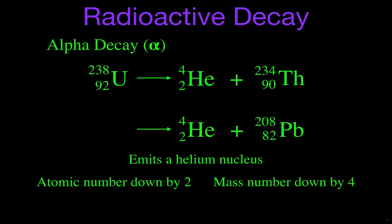We can go back the other way: if we know the result of alpha decay is lead-208, we just add the two numbers back up — we get 84 and 212 to start with. Element 84 is polonium, so polonium-212 undergoes alpha decay to yield lead-208. We can add up the masses on the left and right — conservation of mass and conservation of charge — and you can see we have the same mass and the same charge on both sides of the equation.